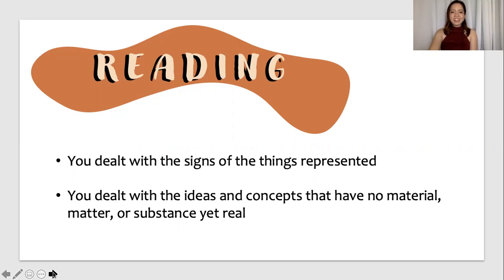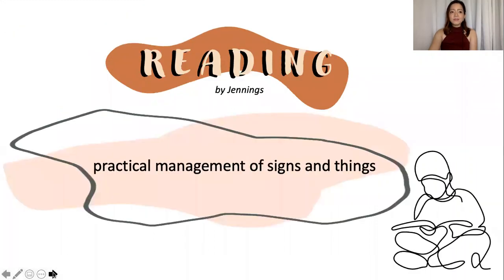So how many yeses and nos did you get? Well, these skills are very important in reading. That is right, you did a special kind of reading in which it is the culmination of all the skills. You dealt with the signs of the things represented. You dealt with the ideas and concepts that have no material, no matter or substance, yet real. But you cannot do this kind of reading if some of these skills are absent.